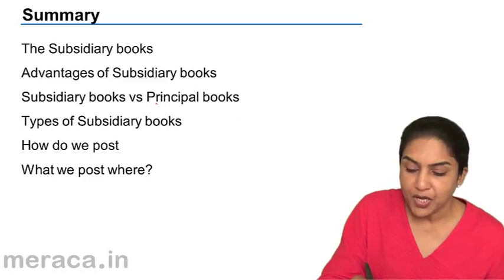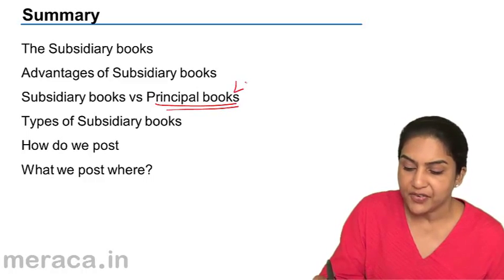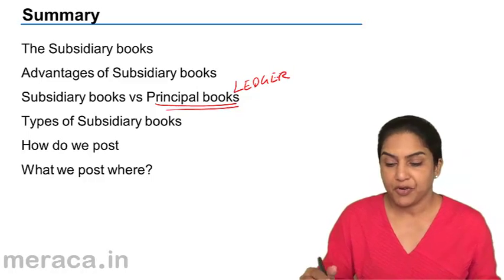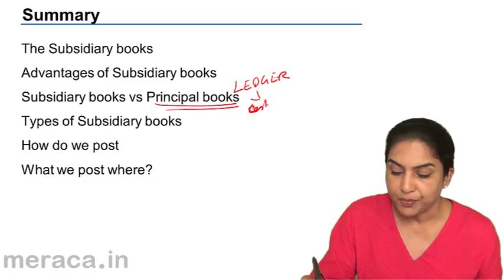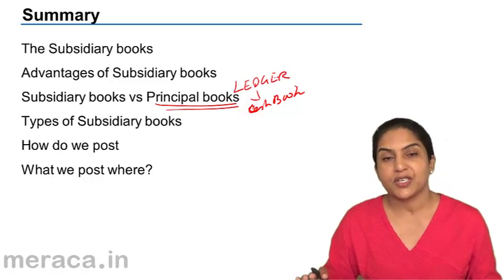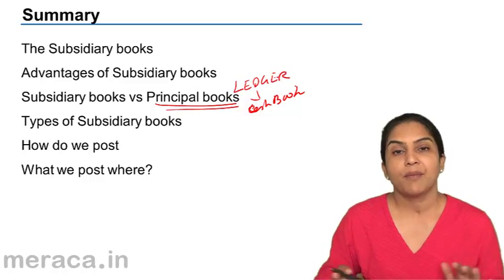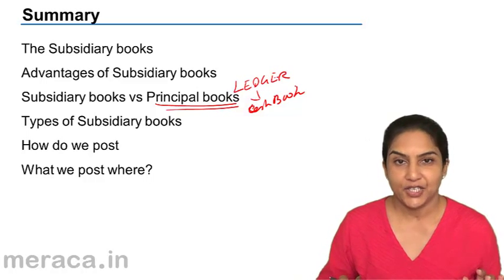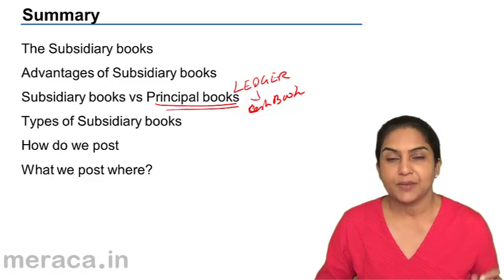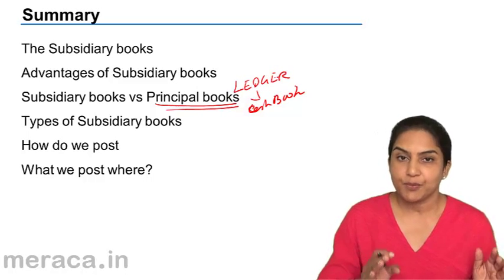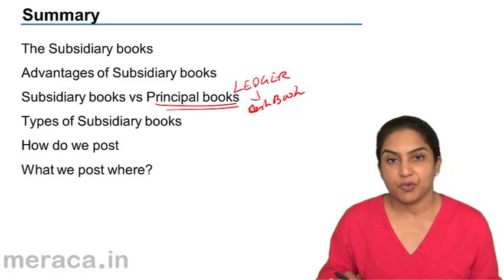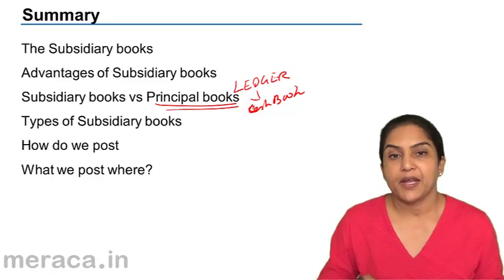Subsidiary book versus principal book: the principal book of accounts is our ledger. All ledger accounts form the principal book of accounts, and this also includes the cash book, because the cash book is a journal — we first record in it — but it also serves the purpose of a ledger. So it is a principal book, not really a subsidiary book.